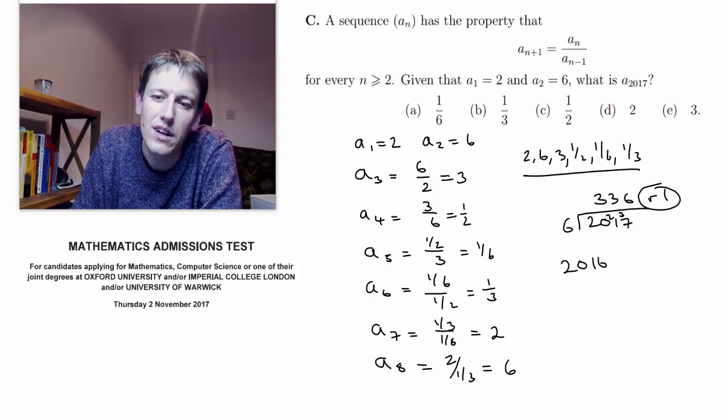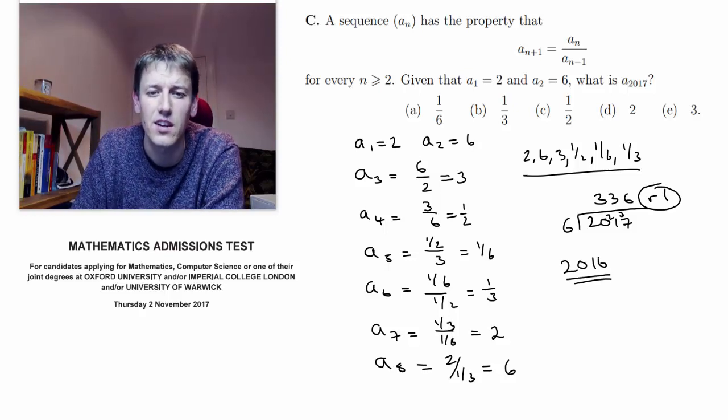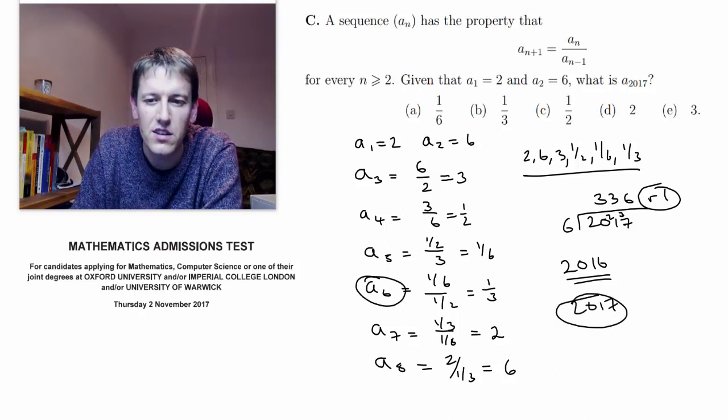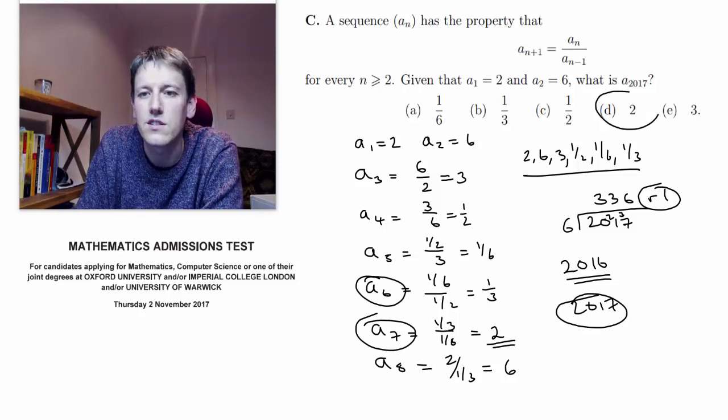because it means that 2016 is a multiple of 6, so the 2016th term will be the same as a6, which is one third. So the 2017th term is going to be the same as a7, which is 2, and the answer is D.